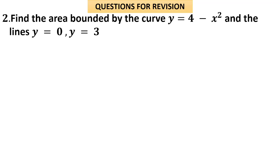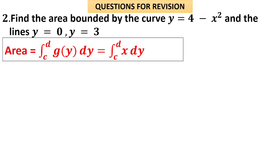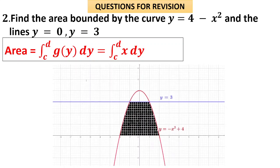Find the area bounded by the curve y = 4 − x² under the lines y = 0 and y = 3. Here we have been given the area bounded by the y-axis and the lines y = 0 and y = 3. The area will be integral c to d of x dy, because the range of y is given. This is a downward parabola; we integrate from y = 0 (the x-axis) to y = 3, a line parallel to the x-axis.